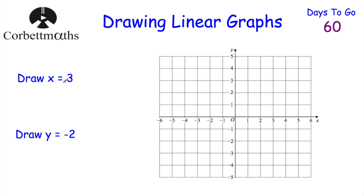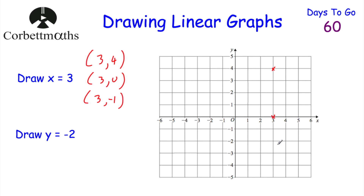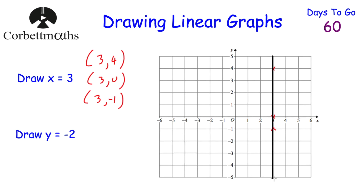If I was to draw the graph x equals 3, these are all the coordinates where the x-coordinate is 3, such as (3, 4), (3, 0), or (3, -1), and so on. If we plot these coordinates, all those points lie on a vertical line passing through 3 on the x-axis — so this line is x equals 3. If asked to draw x equals 4, it would be a vertical line through 4 on the x-axis. x equals -1 would be a vertical line through -1 on the x-axis.